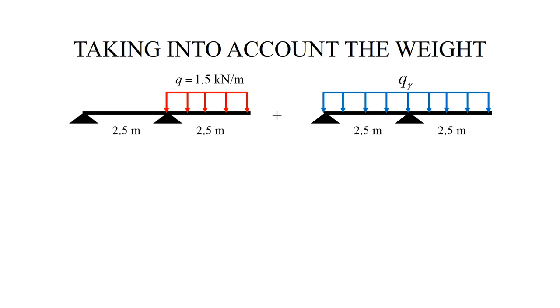To calculate Q gamma, we first consider an elementary part of beam of length delta x, then the weight of that elementary part is the specific weight gamma times the volume. The volume could be written as b squared delta x, since the beam has a square cross section.